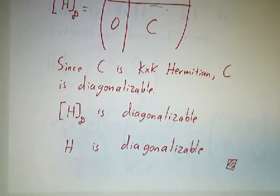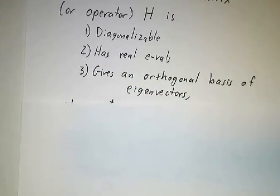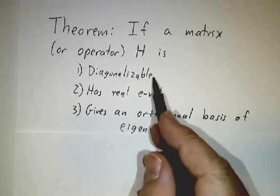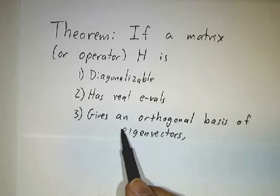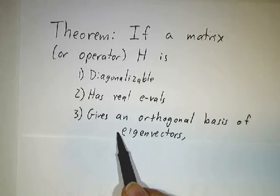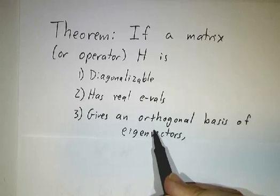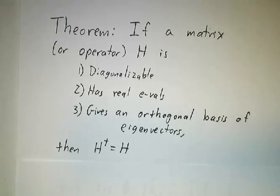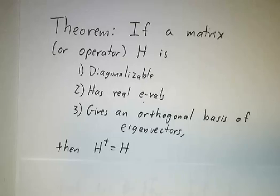Now, one last thing. We learned that if you have a Hermitian matrix, then it's diagonalizable, has real eigenvalues, and you can find an orthonormal basis of eigenvectors. I claim the converse: if you can find a matrix that's diagonalizable, has real eigenvalues, and has an orthogonal basis of eigenvectors, then it's automatically Hermitian. So these three properties completely characterize Hermitian matrices.